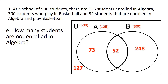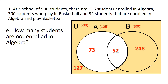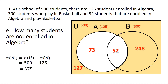Another question: how many students are not enrolled in algebra? This is the complement of A — all elements of the universal set not inside set A. The formula is: A' = U − |A| = 500 − 125 = 375 students who are not taking up algebra out of the 500 students.